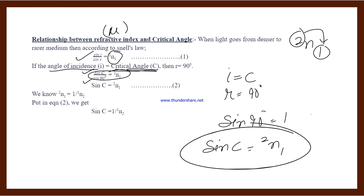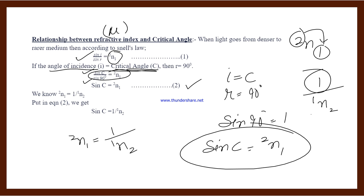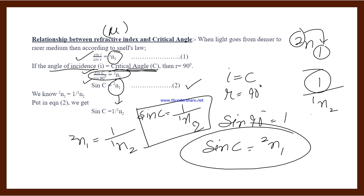At the critical angle condition: angle of incidence equals the critical angle (i = C), and the angle of refraction r = 90 degrees. Substituting into Snell's law: sin C / sin 90 = 2n1. Since sin 90 = 1, we get sin C = 2n1. Using the reciprocal relation, 2n1 = 1/n12, so the final answer is: sin C = 1/n. This is the relationship between critical angle and refractive index.